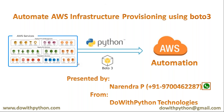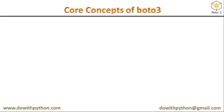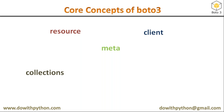In this video we are going to see what are the core concepts of boto3 to work with AWS services. The seven core concepts of boto3 are: resource, client, meta, collections, paginators, waiters, and session.